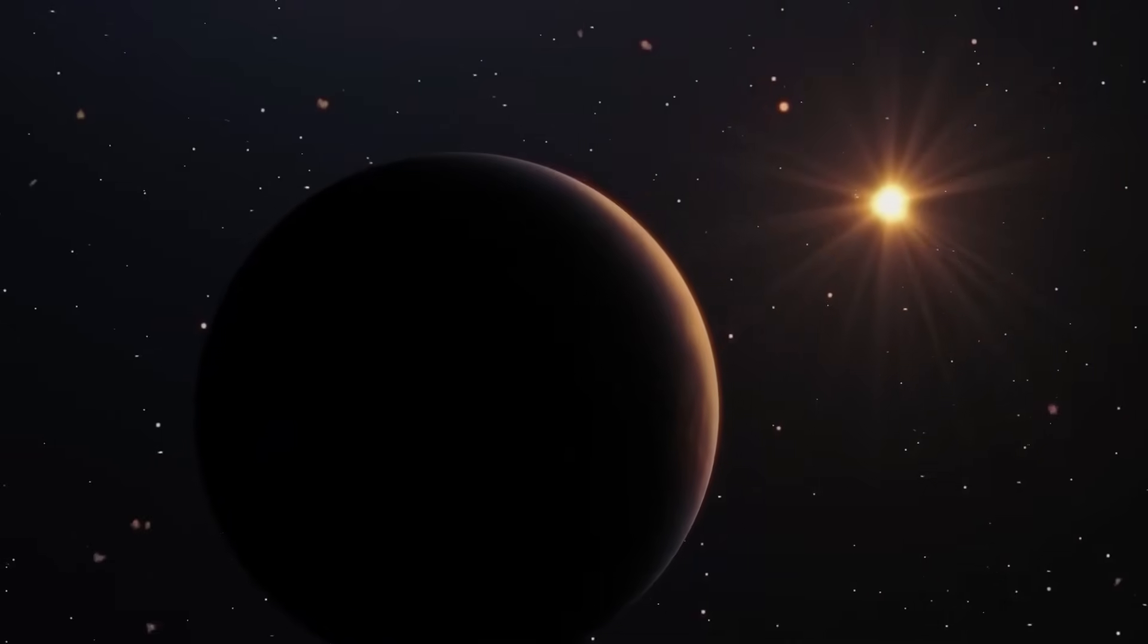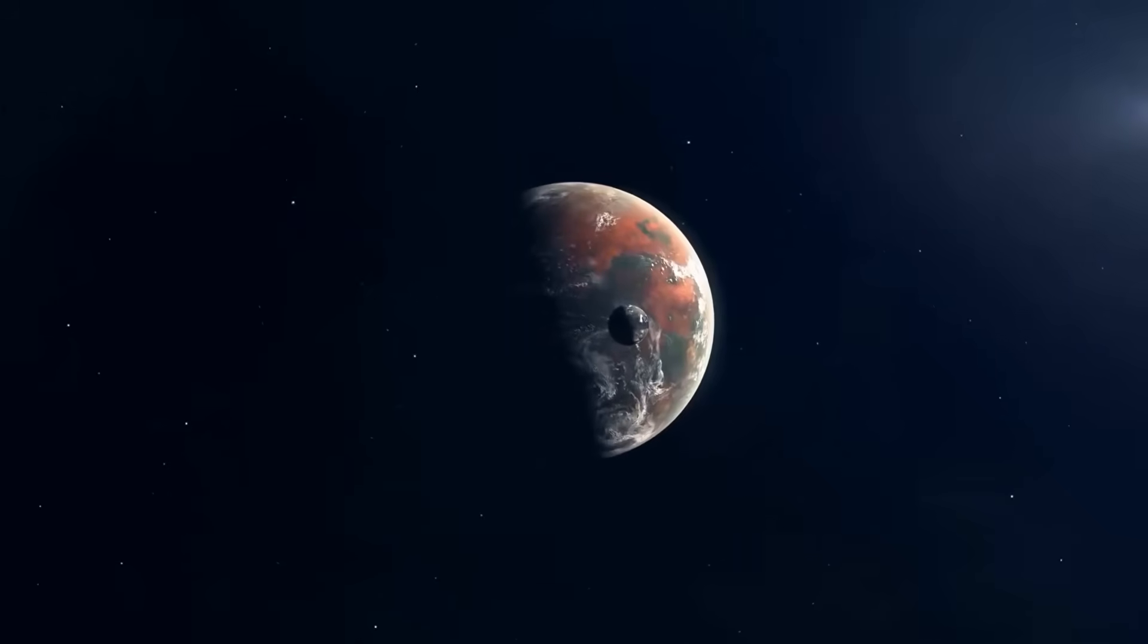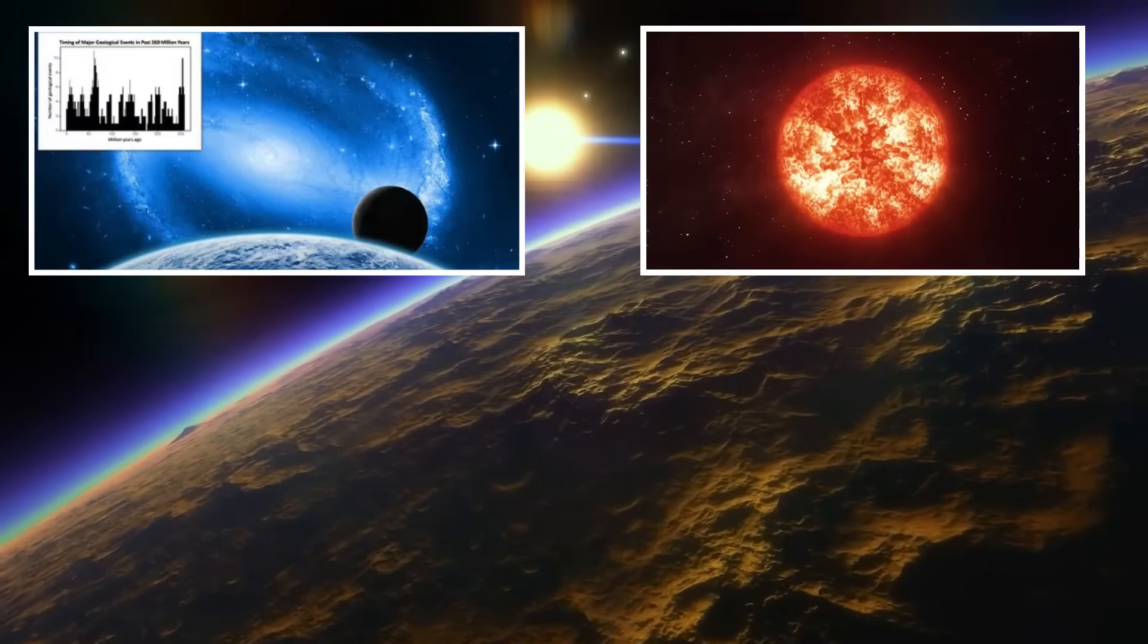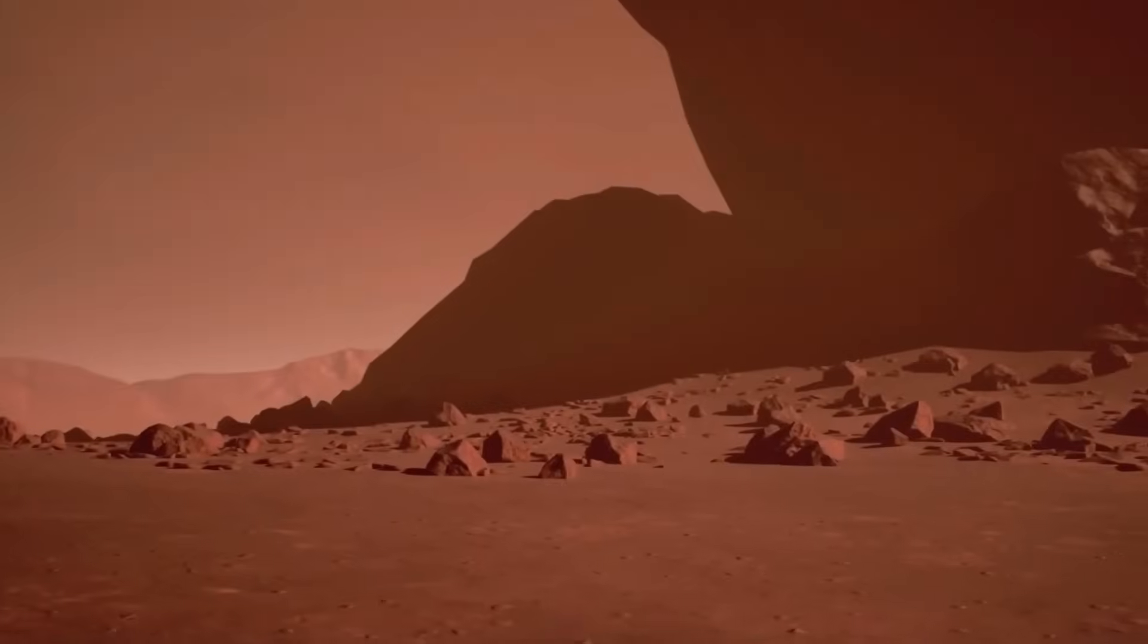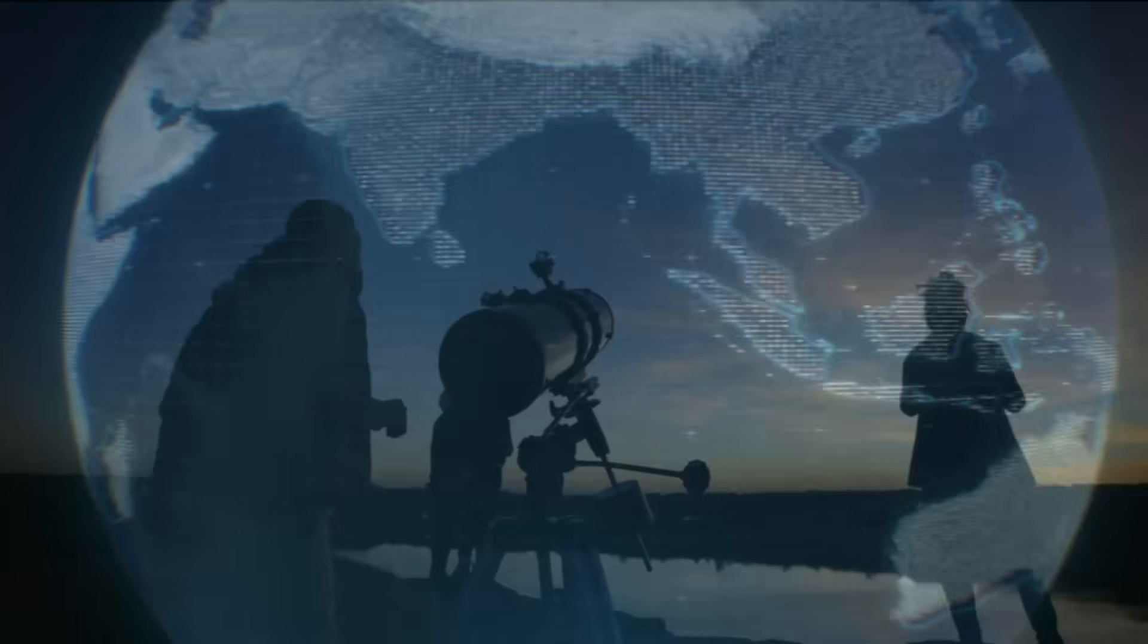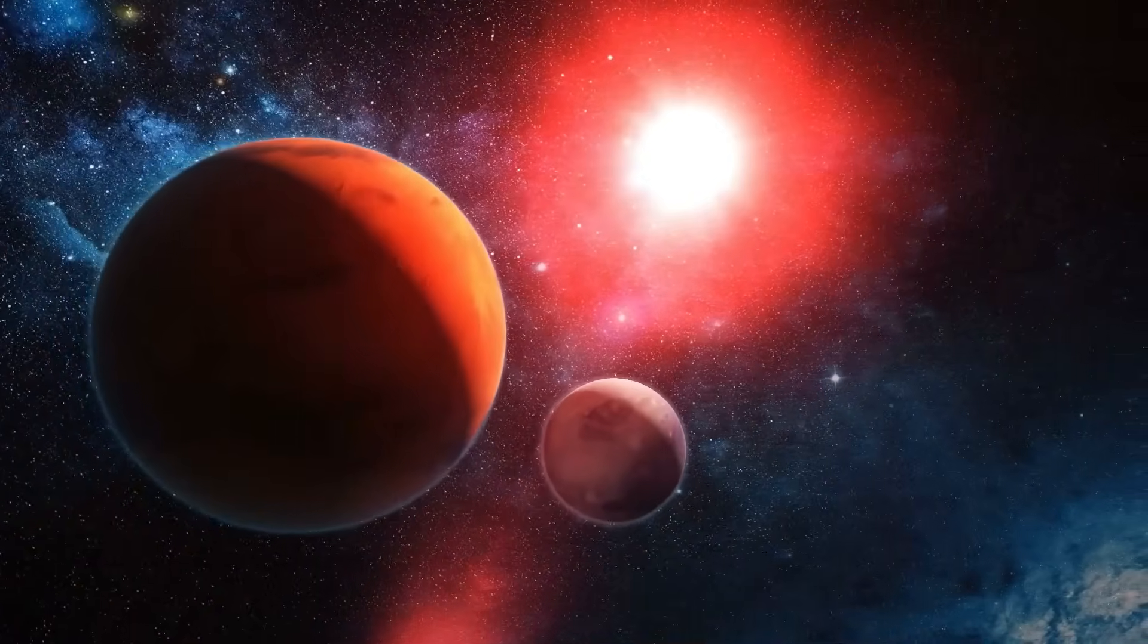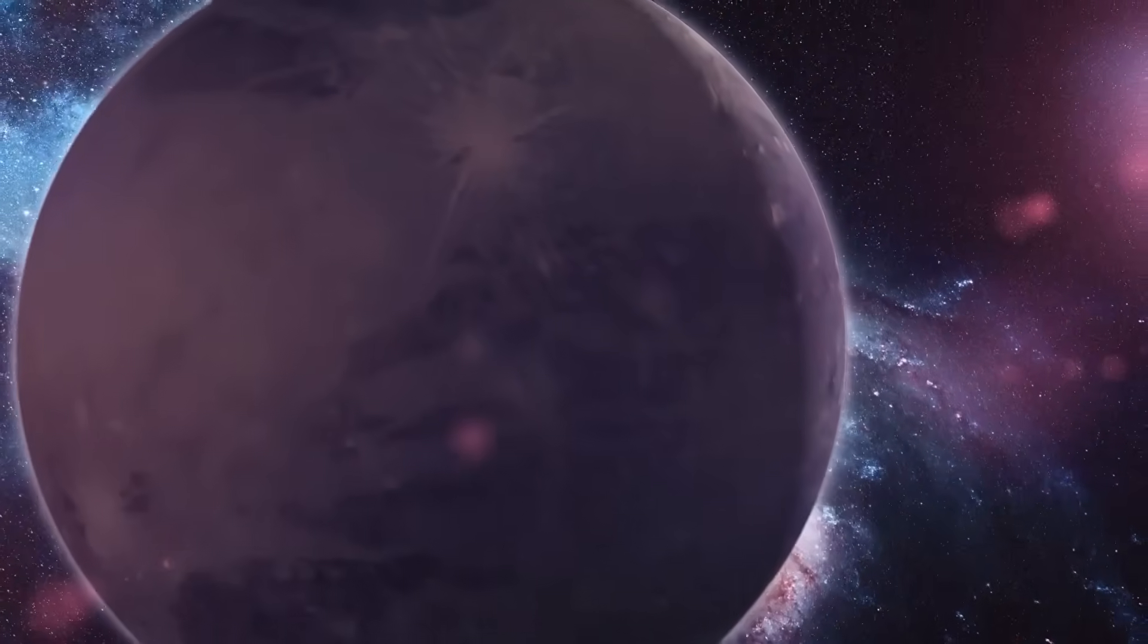Three: a previously unknown phenomenon in exoplanet science. The most intriguing possibility is that this structure represents a completely new type of planetary feature, something unseen in our studies of exoplanets so far. This would mean Proxima b is home to geological or atmospheric processes that have not been accounted for in current models. No other exoplanets observed to date have shown a formation with this specific combination of characteristics. If this anomaly is not explained by standard geology or mineral deposits, it could signal an entirely new planetary process. The discovery could force a re-evaluation of how rocky planets form and evolve under extreme stellar conditions. At this stage, no single theory fully explains all aspects of the anomaly, leaving astronomers with more questions than answers. The next step is to collect even more data and refine these hypotheses further.